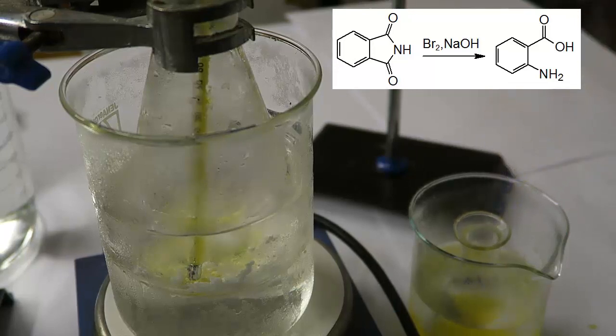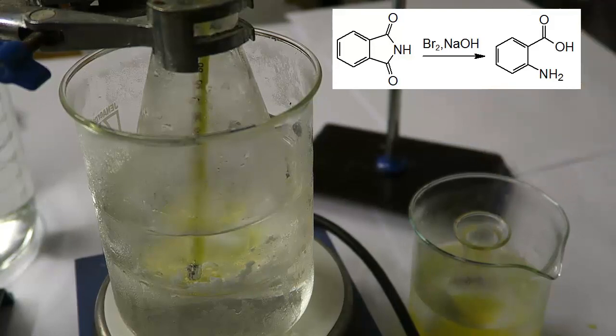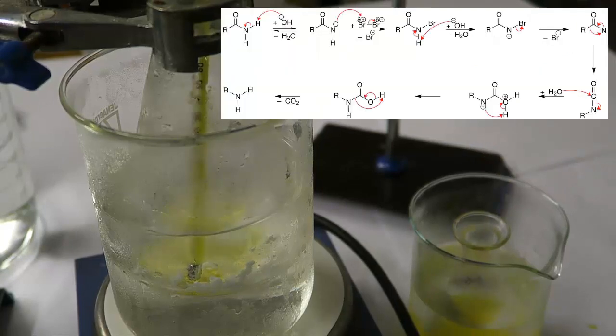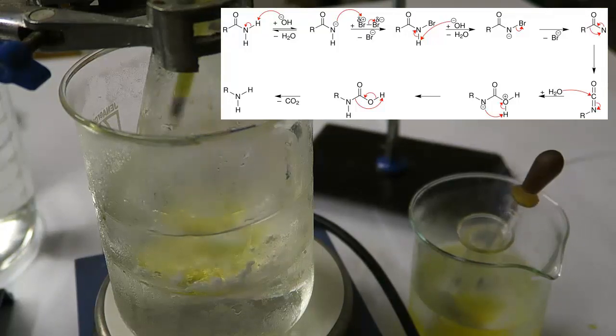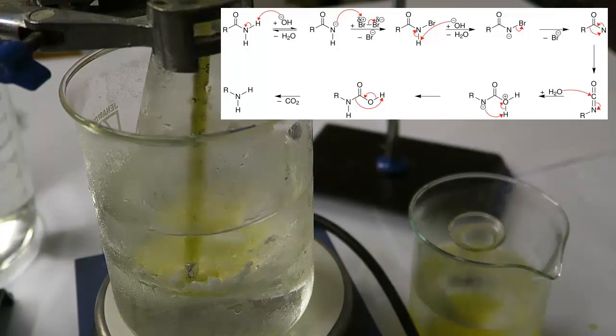The overall reaction can be simplified as shown. In terms of mechanism, we have a so-called Hofmann rearrangement going on. The Hofmann rearrangement is an organic reaction used to convert a primary amide to a primary amine. This is done by using a base, halogen, water and heat.